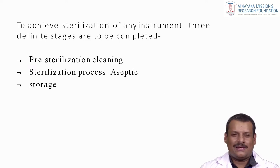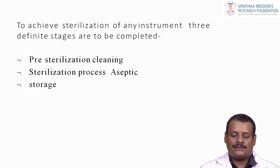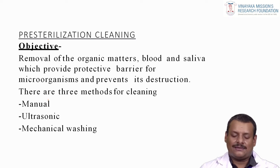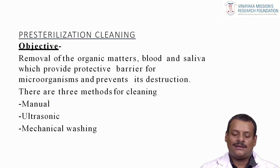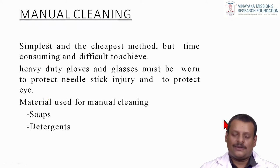To achieve sterilization of any instrument, three definite stages must be completed: pre-sterilization cleaning, the sterilization process, and aseptic storage. The objective of pre-sterilization cleaning is to remove organic matter such as blood and saliva, which provide a protective barrier for microorganisms and prevent their destruction. There are three methods for cleaning: manual, ultrasonic, and mechanical washing. Manual cleaning is the simplest and cheapest method, but time-consuming and difficult to achieve.